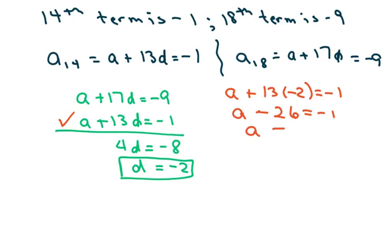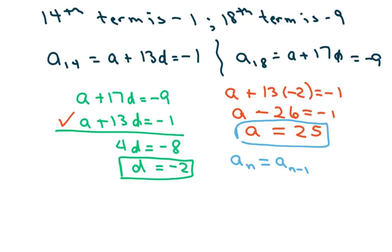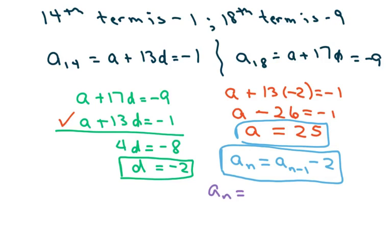And if I add 26 to both sides, I get a is 25. So that's that. My recursive formula is just where you put a sub n: your current term is your previous term plus your d, which is going to be minus 2. And my nth term is going to be my first term — my a, which is 25 — plus n minus 1 times negative 2.